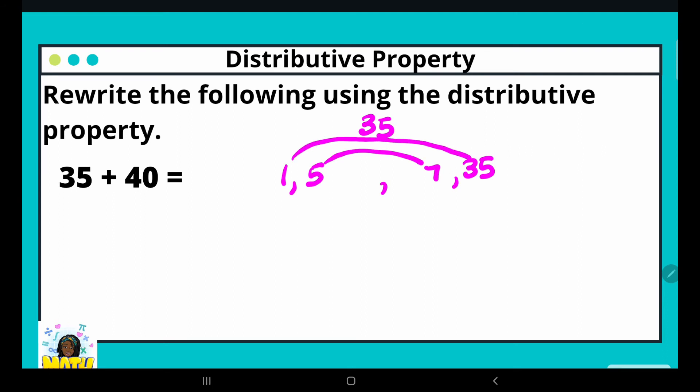Now let's do the same thing for 40. I have 1 times 40, 2 times 20, no 3, 4 times 10, 5 times 8. Now I need to identify my GCF. They have the numbers 1 and 5 in common, so the GCF here is 5.